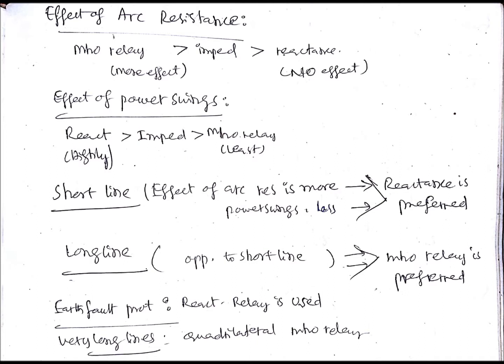There is one important concept known as arc resistance in case of power systems protection. As you know, an arc is going to be established while moving the contacts, and it is going to have some resistance. We are going to discuss what effect this has on transmission lines and how we can avoid it using distance relays — specifically which kind of relay should be used for which type of line to avoid the effect of arc resistance.